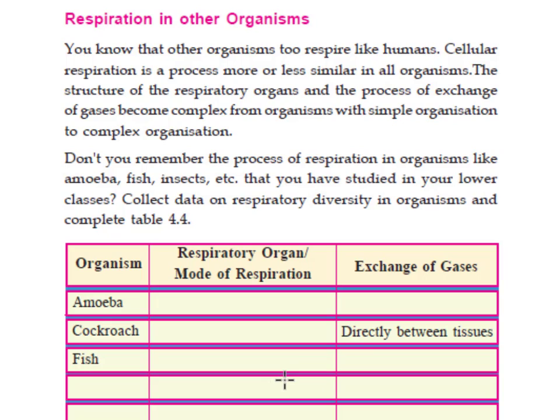Fish are the next organism. The respiratory organ of fish is the gills. When water passes over the gills, the dissolved oxygen in the water rapidly diffuses across the gills into the bloodstream.